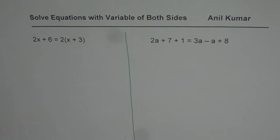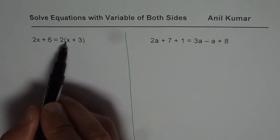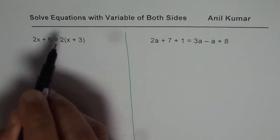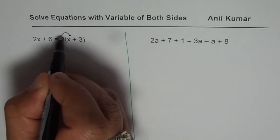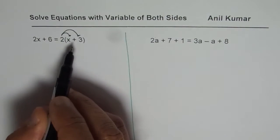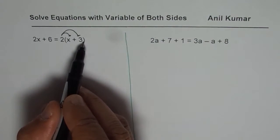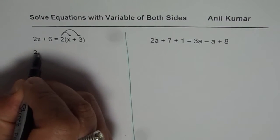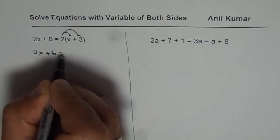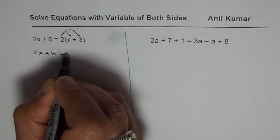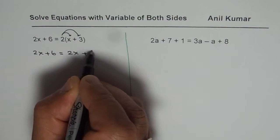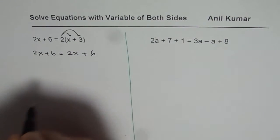The first equation is 2x plus 6 equals to 2 times x plus 3. Let us expand the right side using the distributive property — we will multiply both the numbers in the bracket by 2. So we have 2x plus 6 equals to 2 times x, which is 2x, and 2 times 3 is plus 6. So that is what we get.